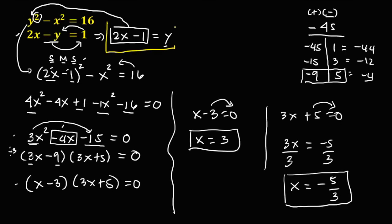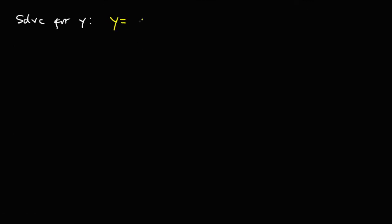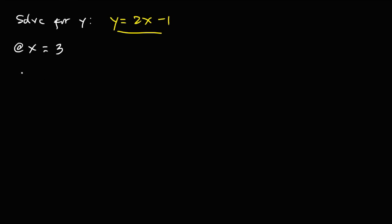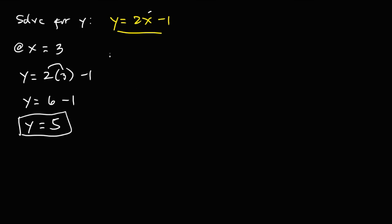Now we solve for y using the equation y equals 2x minus 1. At x equals positive 3: y equals 2 times 3 minus 1, which is 6 minus 1, so y equals positive 5.